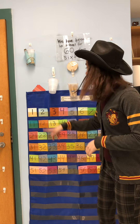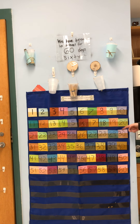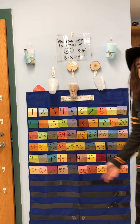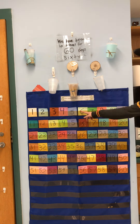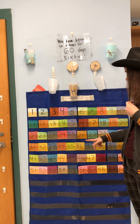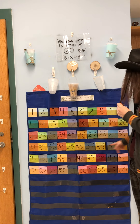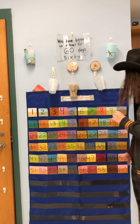Yeah! So you keep practicing. Practice counting all the way from 1 to 60. 10, 20, 30, 40, 50, 60 — that's counting by 10s. 5, 10, 15, 20, 25, 30, 35, 40, 45, 50, 55, 60 — counting by 5s.